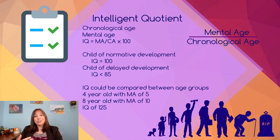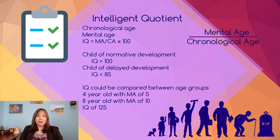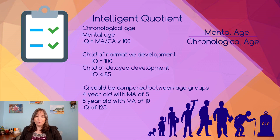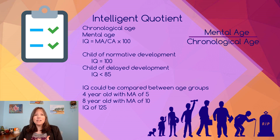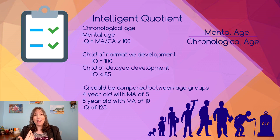If the mental age is lower than the chronological age, they're going to have an IQ of less than 100. If the mental age is higher than the chronological age, they're going to have an IQ of higher than 100. This allowed us to look at just this one quotient and get a snapshot of whether a child is behind or ahead, and kids with IQs of less than 100 are the ones that need extra help.